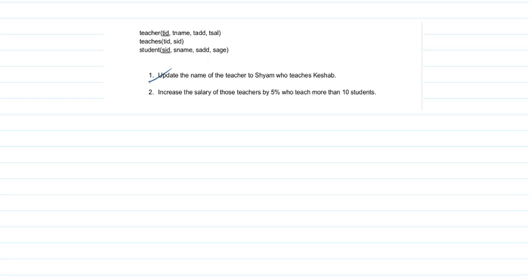Hi again, this is the second video for the same database schema. If you haven't watched the first one, please do watch it because some concepts from the previous video are going to be useful in this one. For the second question, it says: increase the salary of those teachers by five percent who teach more than 10 students. This is obviously an update statement.